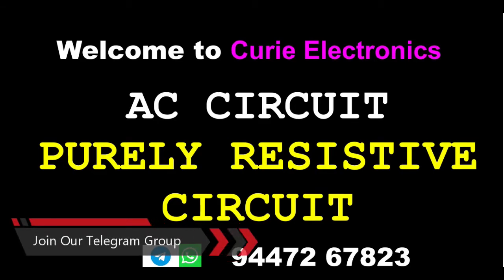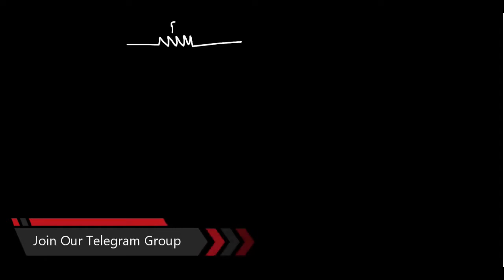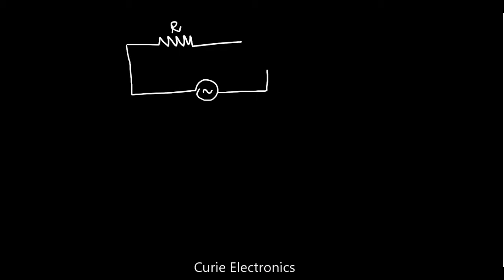We will connect a pure resistor across an alternating current source and ask: what is the relation between voltage and current? We have a resistor R connected across an alternating voltage source, and the alternating voltage source voltage V is given by Vm sin(ωt).